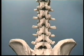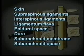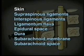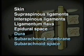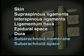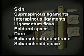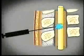A lumbar puncture penetrates these layers: the skin, the supraspinous ligaments, interspinous ligaments, and ligamentum flavum, then the epidural space, the dura, the subarachnoid membrane, and finally the subarachnoid space where CSF is obtained.